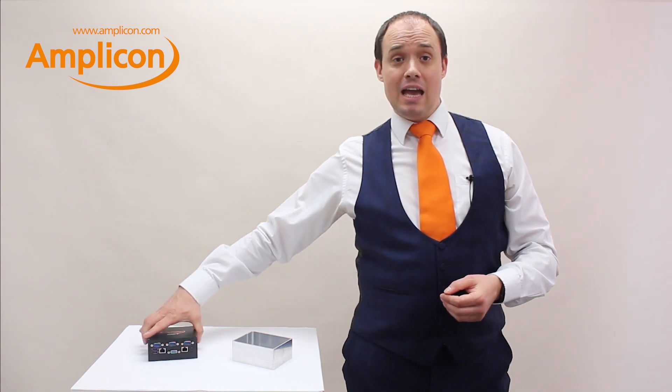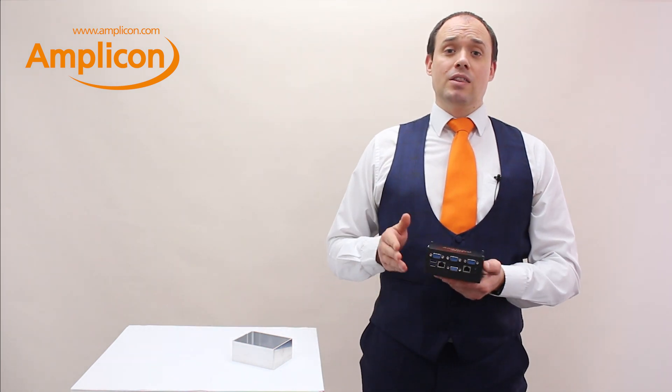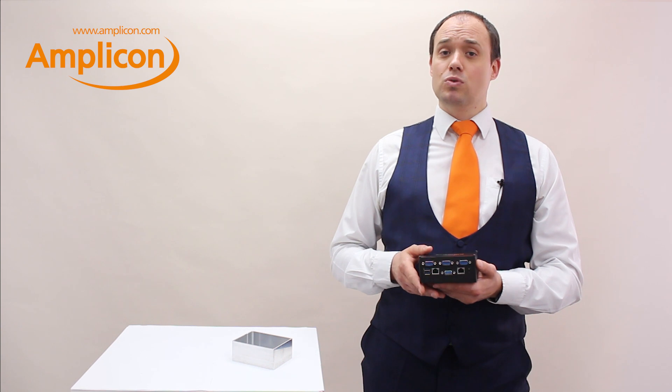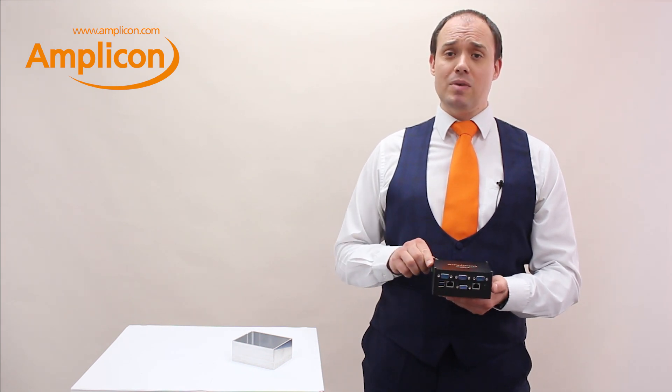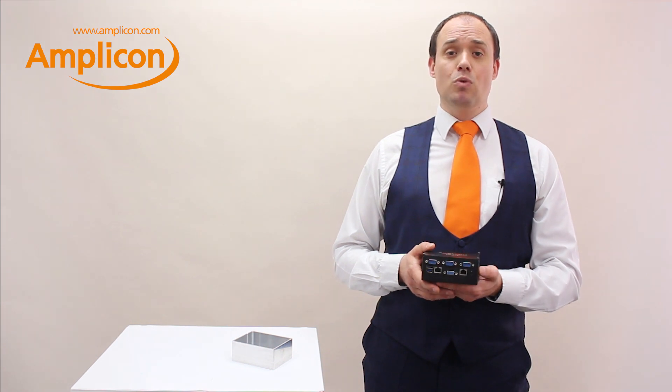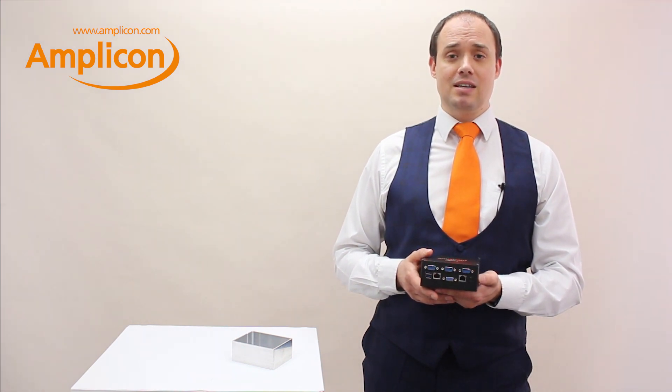Today I have with me the IMPACT-P AL3032. The first thing you'll notice is its ultra-small size. With a footprint of only 120mm by 97mm, the IMPACT-P is the smallest, most versatile Amplicon embedded PC yet.